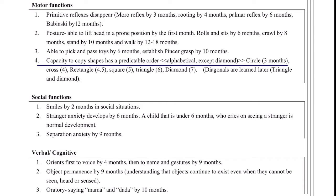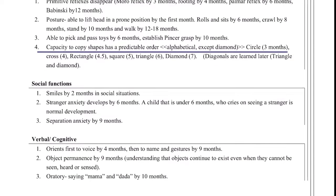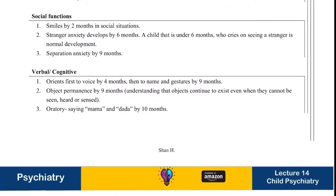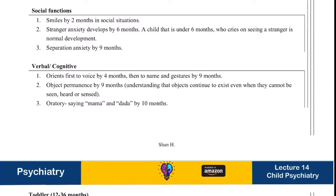Regarding social functions: children will smile in social situations when people are around. Stranger anxiety develops by six months — this must be remembered. A child under six months who cries on seeing a stranger is normal development. This point is very important because it will be tested in MCQs.